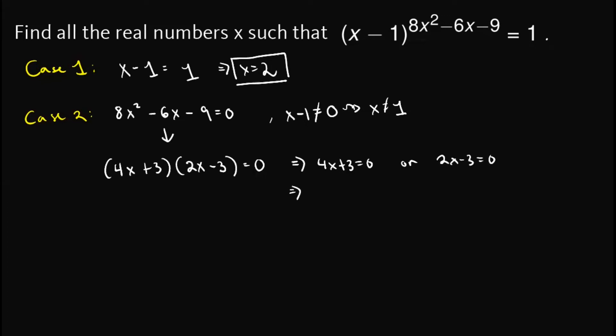So solving for x in these equations, we can first subtract 3 from both sides on the left, and add 3 to both sides on the right. Then dividing by 4 on the left and by 2 on the right, we obtain x is equal to negative 3 over 4 and x is equal to 3 over 2.